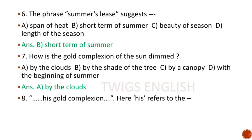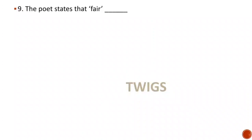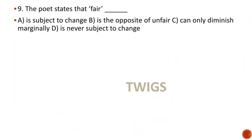MCQ number 8: 'His gold complexion' — here 'he' refers to: the fair youth, the poet's friend, the poet himself, the sun. Here the gold complexion refers to that of the sun. Hence the right answer is option D. Next MCQ: The poet states that fair is subject to chance — yes, option A is the right answer. Fair is subject to chance.